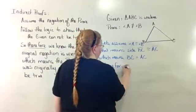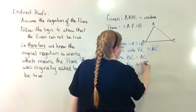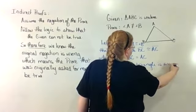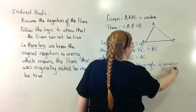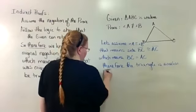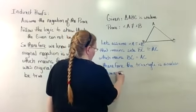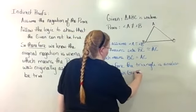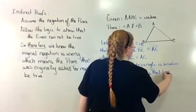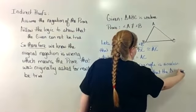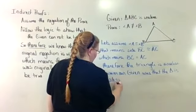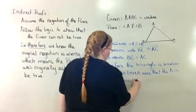So two sides are going to be congruent. Therefore, the triangle is isosceles. However, our given was that the triangle is scalene with no sides congruent.